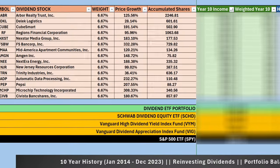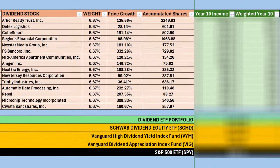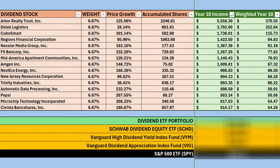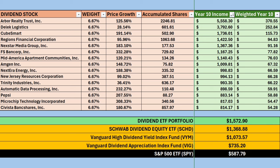For year-10 income results, the top result was Arbor Realty Trust, followed by Delek Logistics, CubeSmart, Regions Financial, and Nexstar Media Group. The total for this portfolio would have been $1,572.90 in year-10 income — and that beat out SCHD, VYM, VIG, and the S&P 500. It wasn't even close.